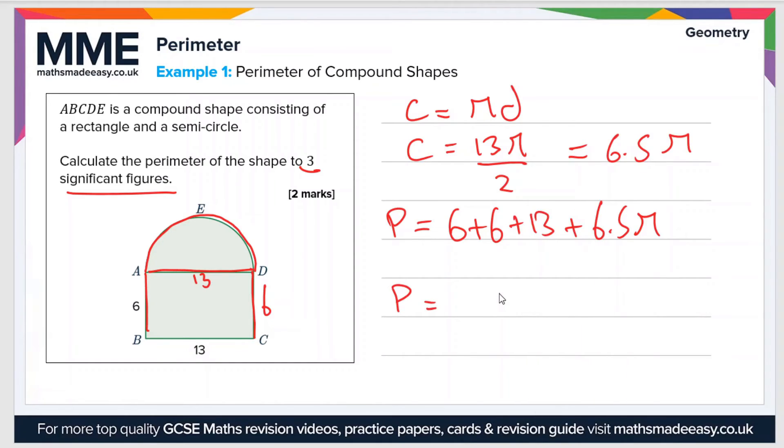So perimeter equals 45.4. Now there are no units given in this question, but if it was centimeters for instance, then this value would be in centimeters. Or if these other numbers were in meters, then this could be meters. So perimeter is always measured in distance.